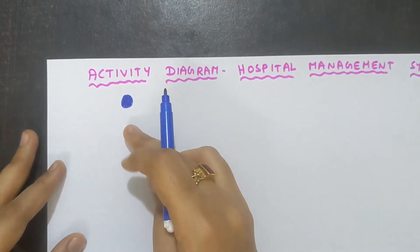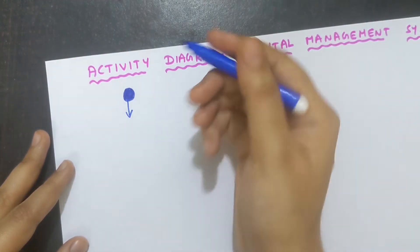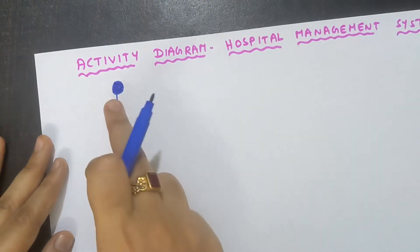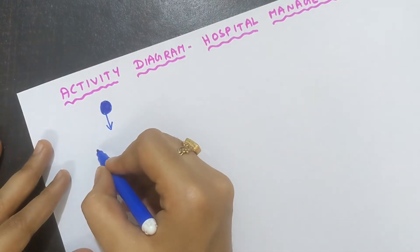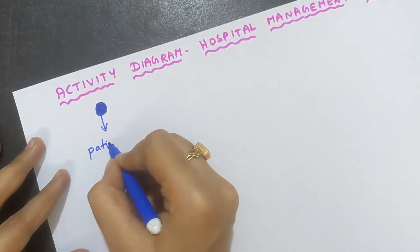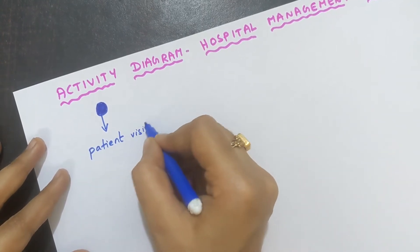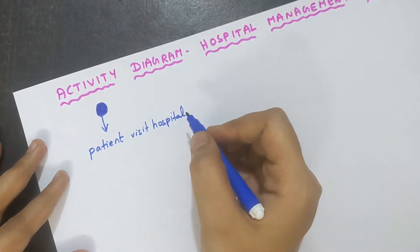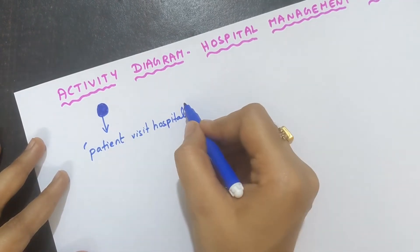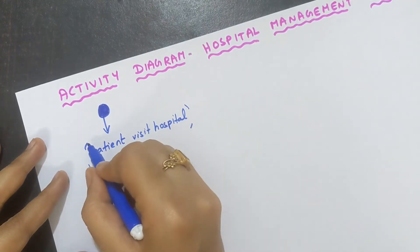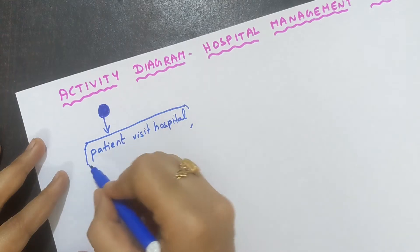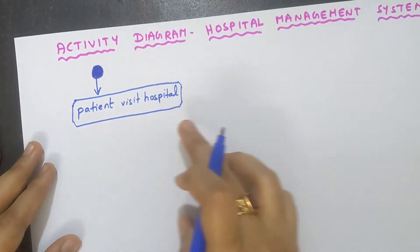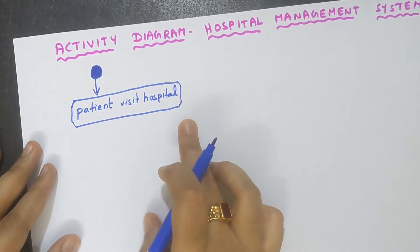After the start, you need to put a downward arrow, and then write the first activity that is going to happen in the hospital management system. The first activity is: the patient will visit the hospital. This activity must be written inside a rectangle with rounded corners.